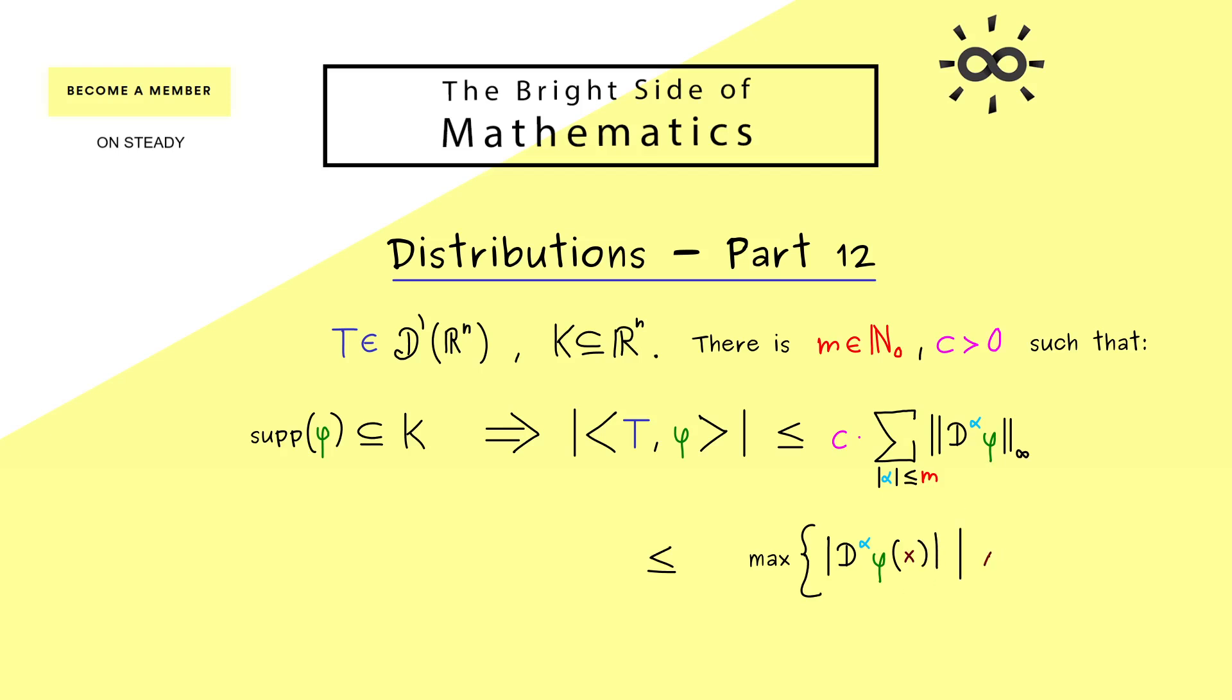Indeed this is exactly what the supremum norm tells us. Therefore we just go through all x in R^n. Moreover, as in the sum we also go through all multi indices α. So you should see, instead of summing up all supremum norms we now just take the largest one.